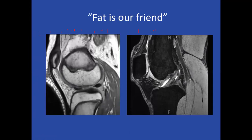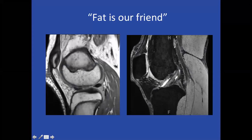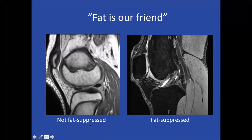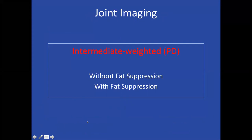What's great about the musculoskeletal system is there's a lot of fat — bone marrow fat, subcutaneous fat — which outlines all the structures. Intermediate-weighted non-fat-suppressed sequences show anatomy — tendons, muscles, cartilage — very well, and then fat suppression brings out fluid, which is high signal on fluid-sensitive sequences. Our approach at Hopkins is one non-fat-suppressed intermediate-weighted sequence and one fat-suppressed intermediate-weighted sequence for all joint imaging: PD with and without fat suppression.